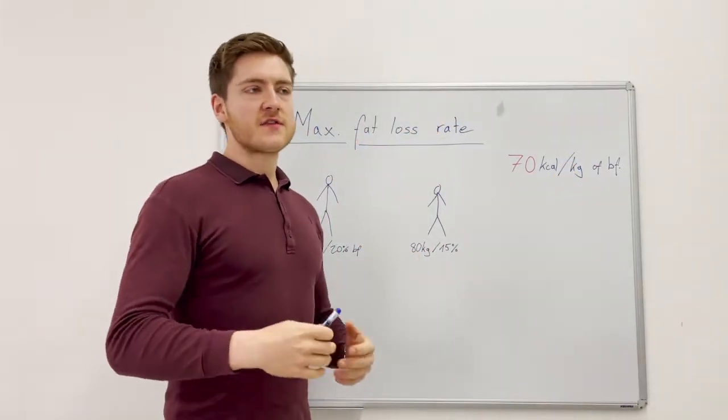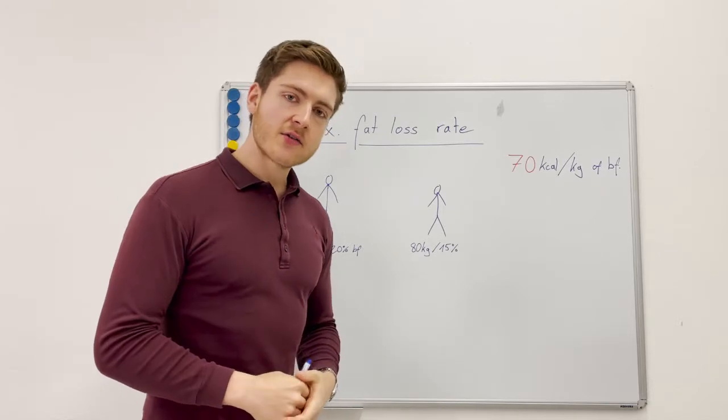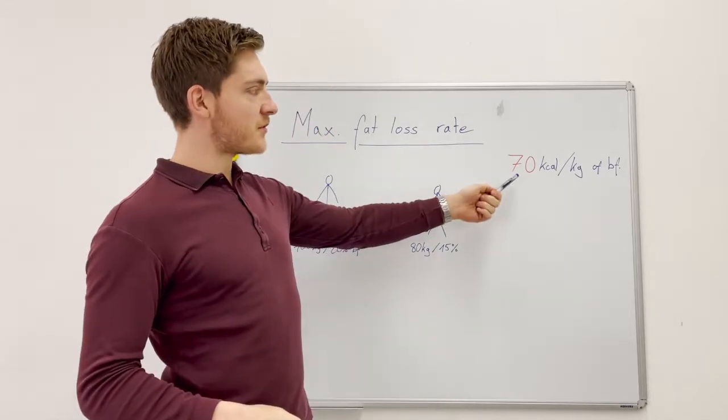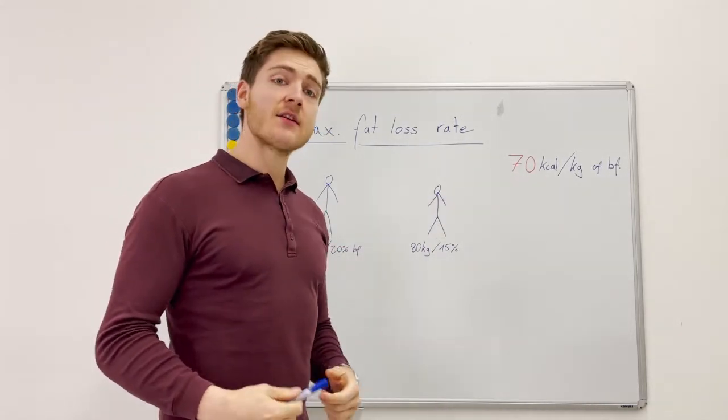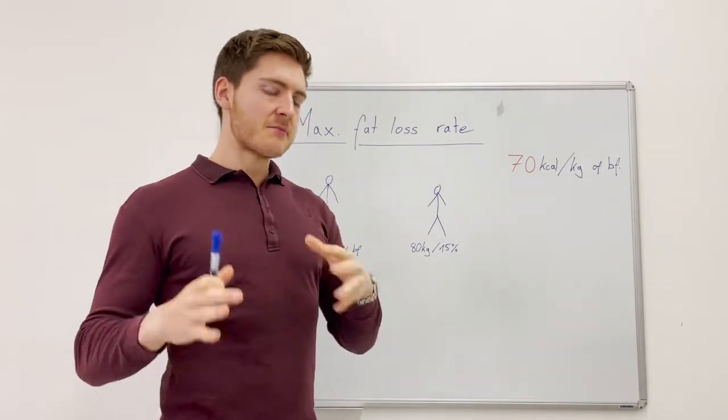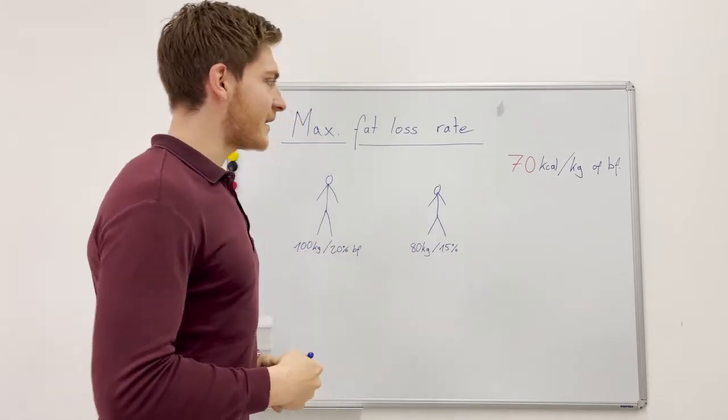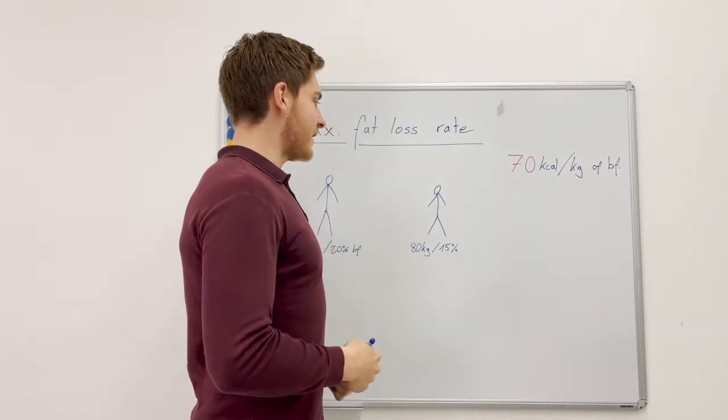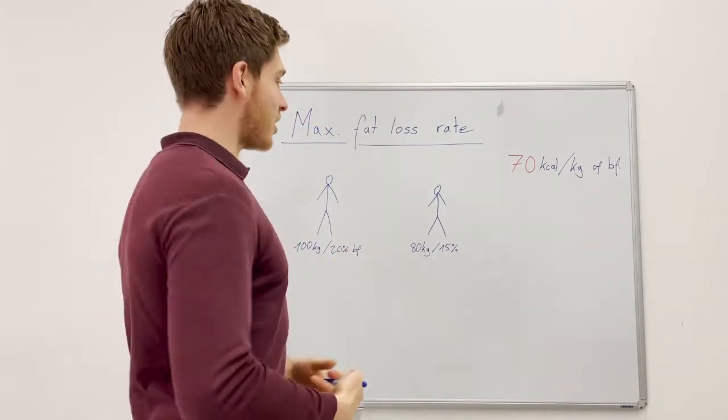That means if someone has 10 kilograms of body fat, he can maximally go 700 calories into a deficit per day without having to lose muscle. Let's have a look how this could look like in reality and how you can use this knowledge for your case.